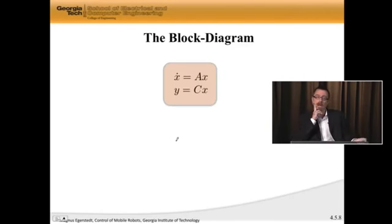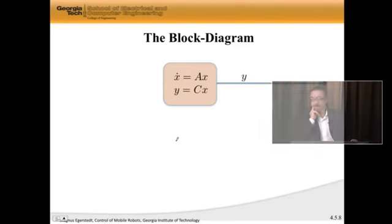So here is what's going on right now. I have x dot is Ax, y is Cx. Out of this thing, I can suck y, right? Because that's what I'm seeing. These are my measurements.